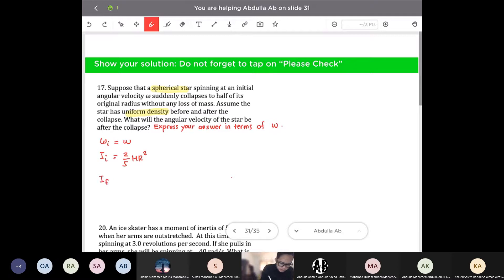So in fact, the moment of inertia final is going to be equal to 2 over 5, same mass, but then the radius now is half of its original radius. So that's going to be r over 2. Do not forget to square it. So if I would simplify the final moment of inertia, that's going to become 2 over 5 m r squared over 4.